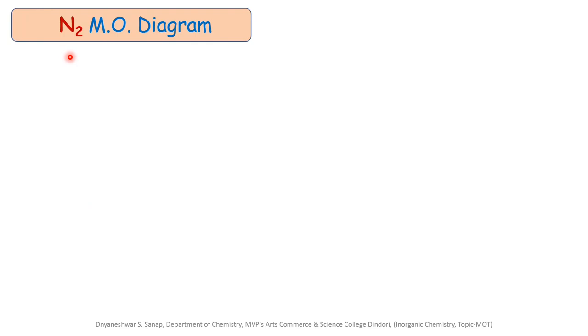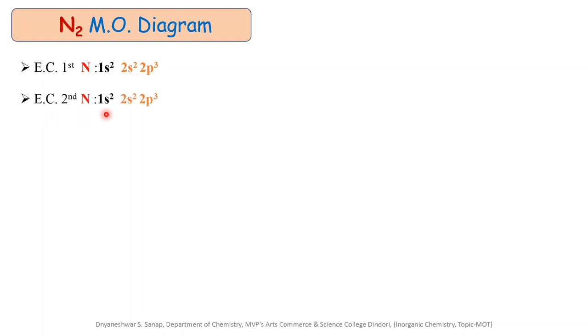The N2 molecule is formed by the combination of two nitrogen atoms. Before we start drawing the Molecular Orbital Energy Level Diagram, we have to understand the electronic configuration for each nitrogen atom. The electronic configuration for the first nitrogen atom is 1s2, 2s2, and 2p3. The first shell (K shell) has the 1s orbital with 2 electrons, and the L shell has the 2s and 2p orbitals carrying 5 electrons. Similarly, the electronic configuration for the second nitrogen atom is 1s2, 2s2, and 2p3.